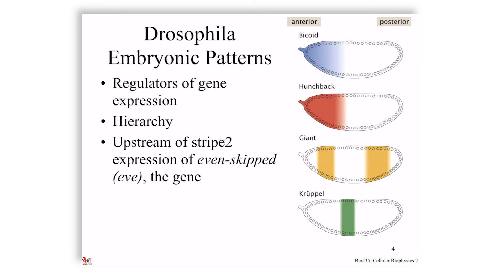We're going to talk about the Drosophila system, which you've likely encountered in a developmental biology course. It's a model organism — we have the genome, the proteome, the interactome, the metabolome, all the 'omes' — and now we just need to make sense of it, which we can't completely. What we're looking at is the anterior-posterior gradient in the Drosophila embryo, which forms classical embryonic patterns and regulates gene expression. There is a hierarchy: Bicoid is the most upstream, also called a maternal gradient.